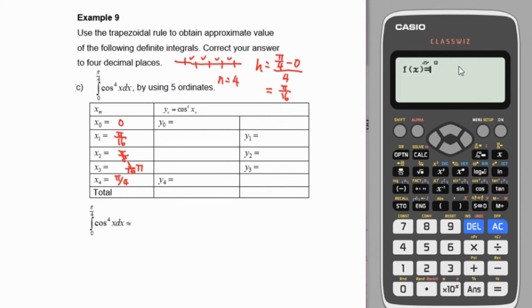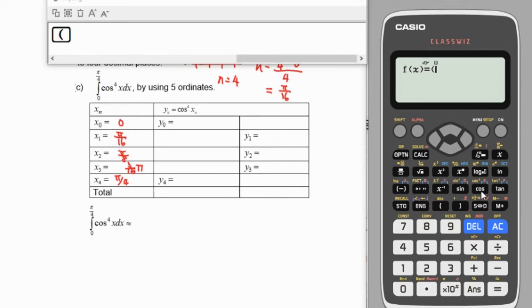We plug in our function, which will be in brackets: cos of alpha x, then to the power of 4. So cos to the 4 of alpha x, then equals.